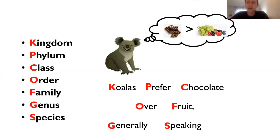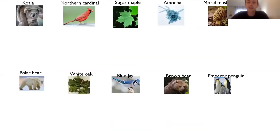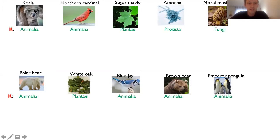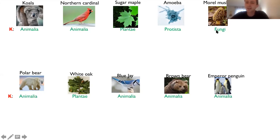Let's go back to the 10 living things from the start and now give them their kingdom, phylum, order — all of those. Starting with their kingdoms: the koala, northern cardinal, polar bear, blue jay, brown bear, and emperor penguin are all animals, so they all have the animalia kingdom. The oak tree and sugar maple have the kingdom plantae — they are part of the plant kingdom, not animals. And check out the mushroom — it's not a plant. It's got its own kingdom called fungi.